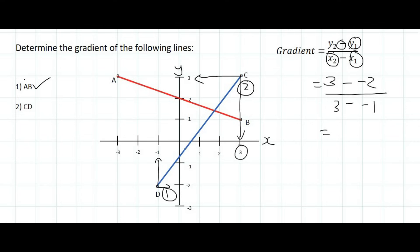So if you have to simplify that: at the top you would have 3 minus minus 2, which is 5; at the bottom, you would have 3 minus minus 1, which is 4. And so the answer is 5 over 4. Or you could type it all in on the calculator, but that is the answer for that one.